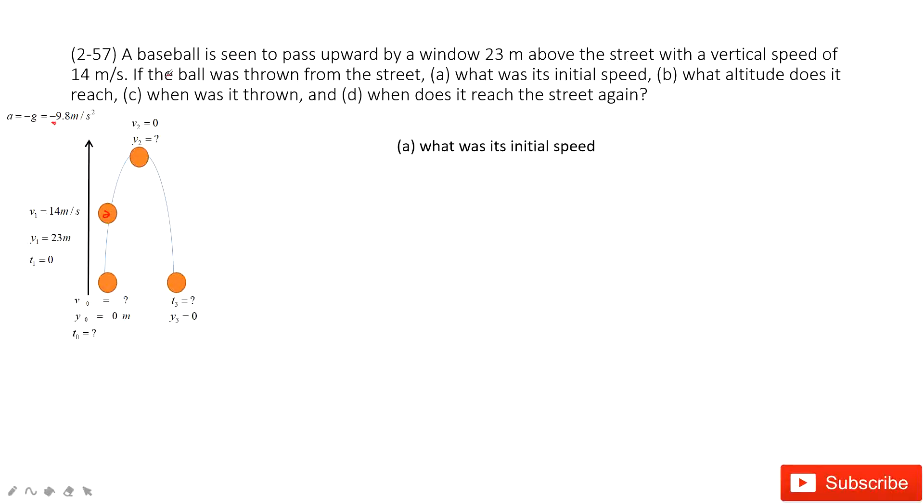And if the ball was thrown from the street, so from the street there, ask you what was the initial speed. So there, we can look at this part from the initial to the v1. We know the position, y1, y0. And we also know the acceleration.